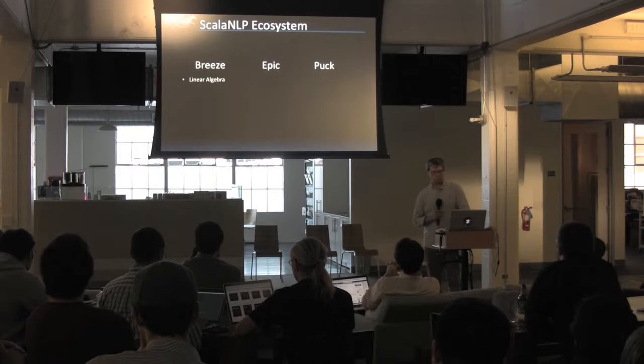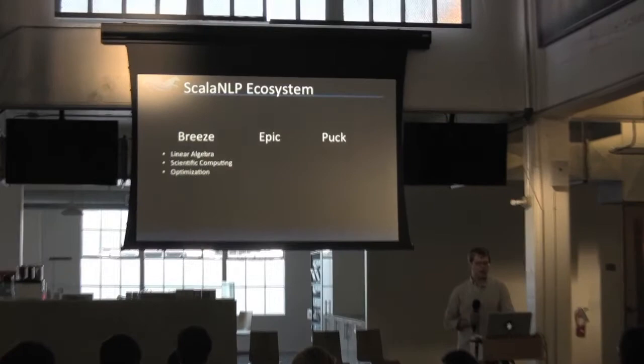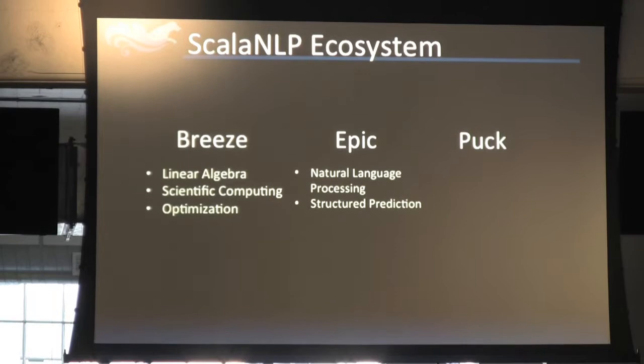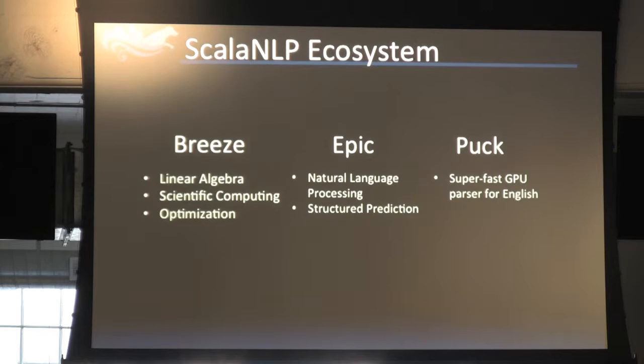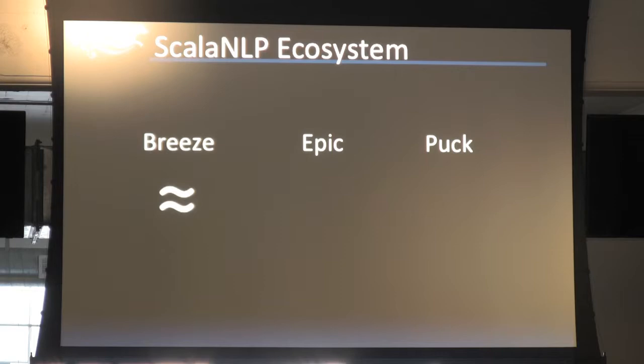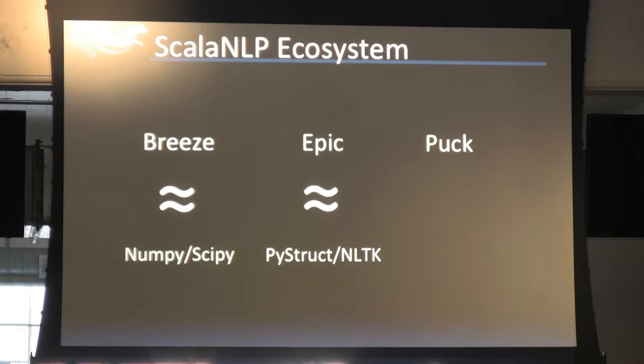Breeze offers linear algebra, scientific computing, and numerical optimization, while Epic is natural language processing and also structured prediction. Puck offers an incredibly fast parser for English that parses over 400 sentences a second at state-of-the-art accuracy. For those familiar with the Python ecosystem, Breeze is kind of like NumPy and SciPy. Epic is very loosely like PyStruct and NLTK combined. And there's nothing like Puck.